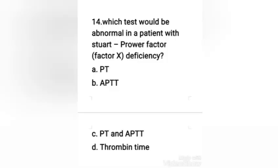Next question: which test would be abnormal in a patient with Stuart-Power factor (factor 10) deficiency — PT, APTT, both PT and APTT, or thromboplastin? The right answer is option C, both PT and APTT. Factor 10 is involved in the common pathway of the coagulation cascade; therefore its deficiency prolongs both PT and APTT.